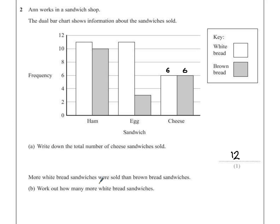So to find out how many more white bread sandwiches than brown bread sandwiches there were, we need to know how many there are of each. So I'm going to continue on by labelling each of the bars on my graph to find out how many of each colour was sold.